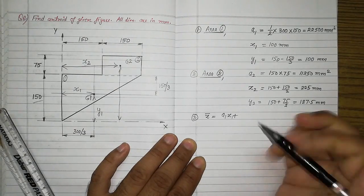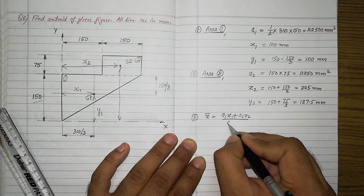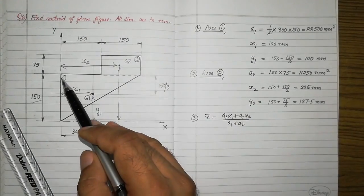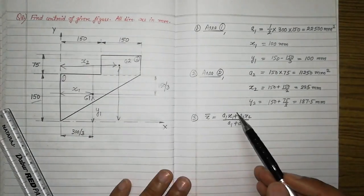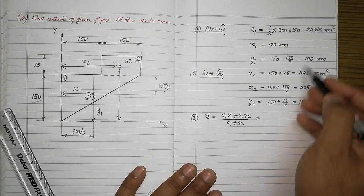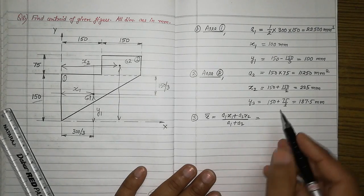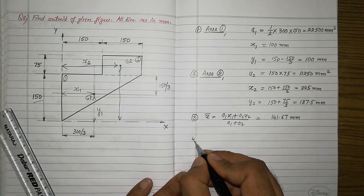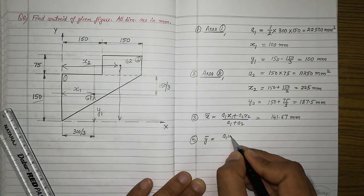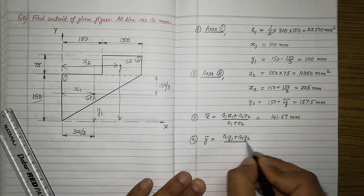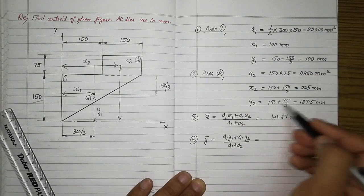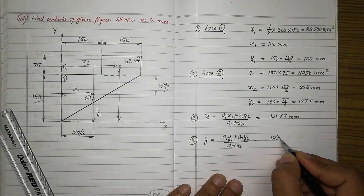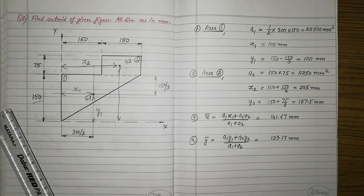Finally, we calculate x̄ and ȳ. Since both areas are added: x̄ = (A1·x1 + A2·x2) / (A1 + A2). Substituting the values gives x̄ = 141.67 mm. Similarly, ȳ = (A1·y1 + A2·y2) / (A1 + A2), which gives ȳ = 129.17 mm. I hope this problem is clear. Thank you very much.